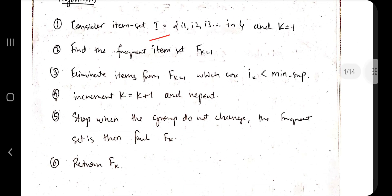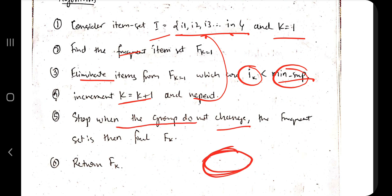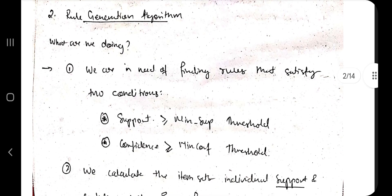For the algorithm: consider item set I with items i1, i2, ..., in. Set k=1 initially and select one item, counting frequency. Increment k, eliminate items below minimum support count, and repeat. Stop when the groups no longer change — that's the final frequent item set returned. More detail will be covered in the numerical video with examples.